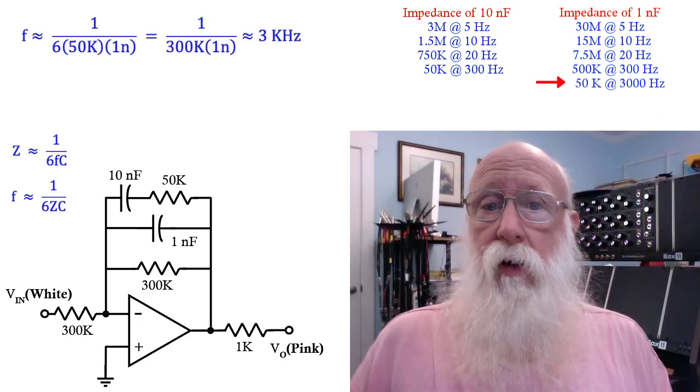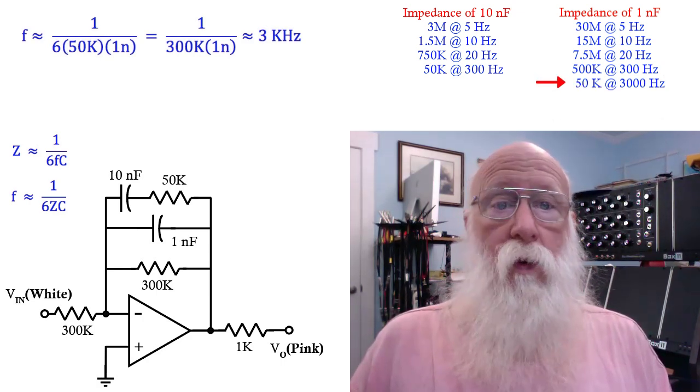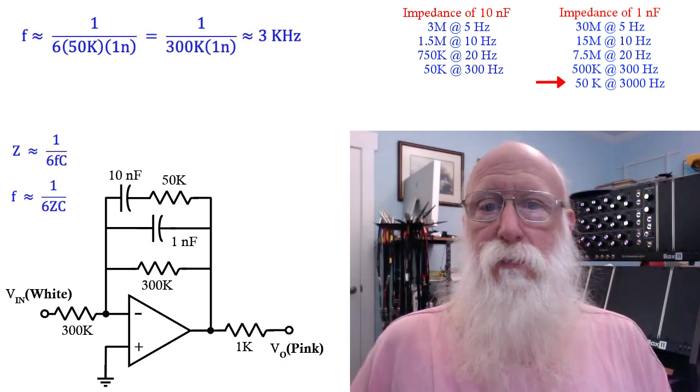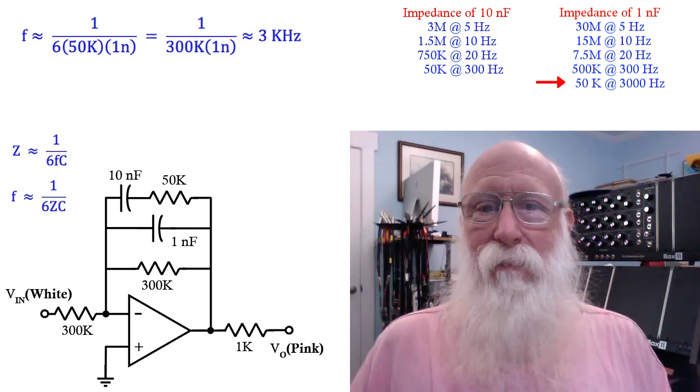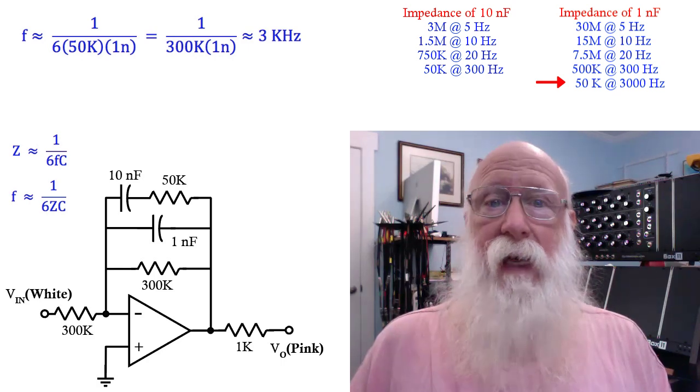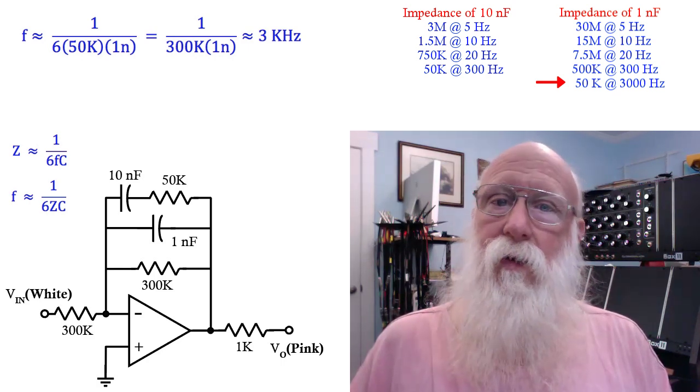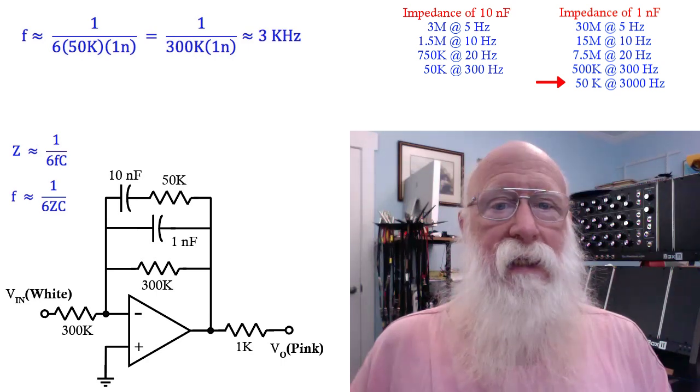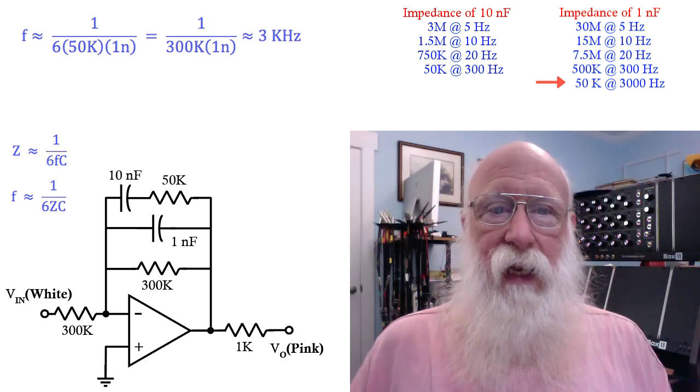So above 3000 hertz, now the 1 nanofarad takes over the response. It becomes the smallest of the three impedances. And as the frequency continues to increase, you start heading back to a roll-off of minus 6 dB per octave.